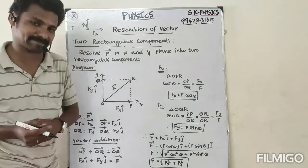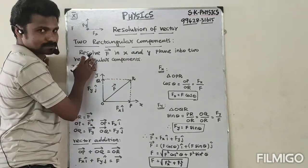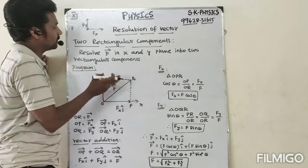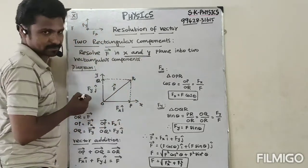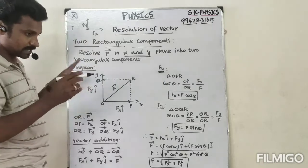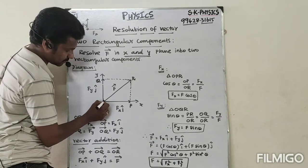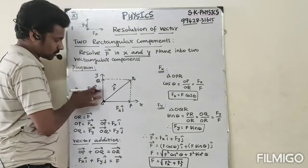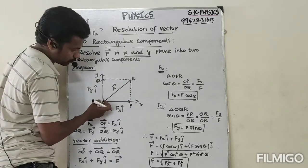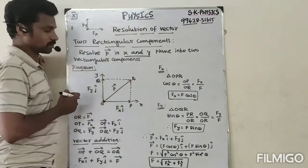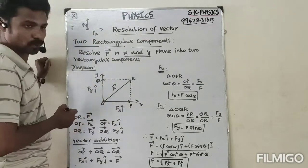How do we find the resultant force? We resolve the two rectangular components. We have to split the vector — the F vector in the xy plane — into two rectangular components. For example, a particle is in a given position and some force is acting on it. The force is split into two components: one along the x-axis and another along the y-axis.